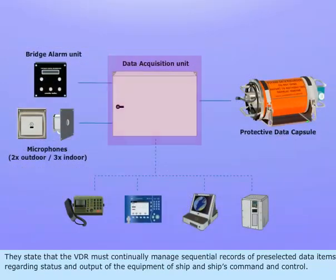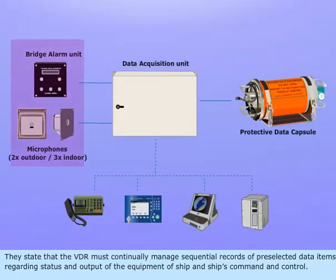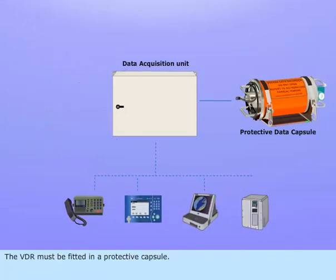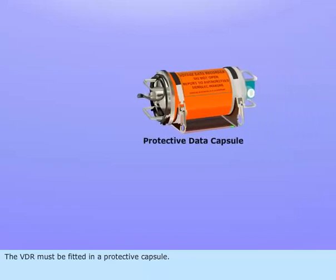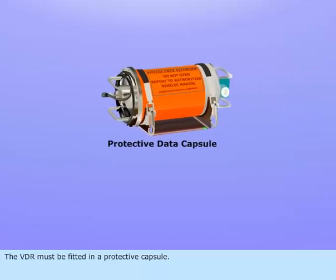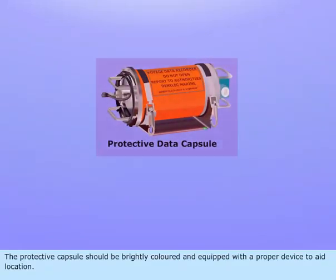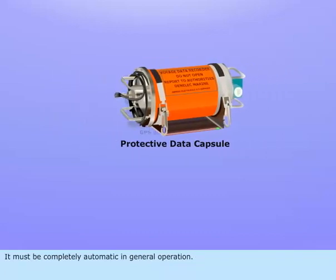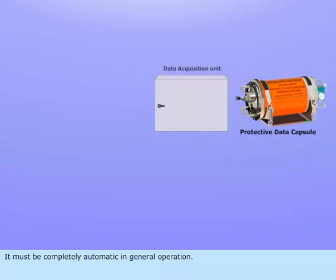They state that the VDR must continually manage sequential records of preselected data items regarding status and output of the equipment of the ship and ship's command and control. The VDR must be fitted in a protective capsule, which should be brightly colored and equipped with a proper device to aid location. It must be completely automatic in general operation.